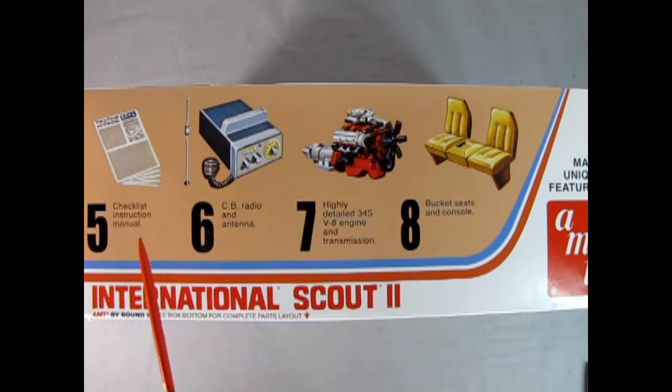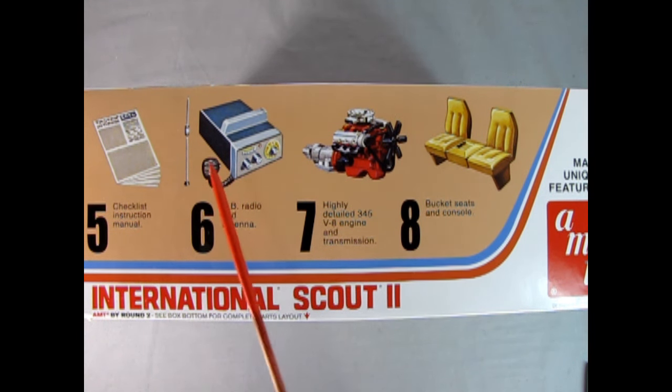Number five, we have a checklist instruction manual. Number six, a CB radio and antenna. Number seven, a highly detailed 345 V8 engine and transmission. Can't forget the transmission, you won't go anywhere without one. And finally, number eight, bucket seats and a console.